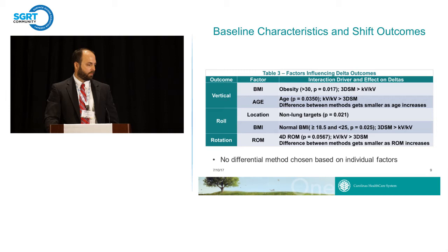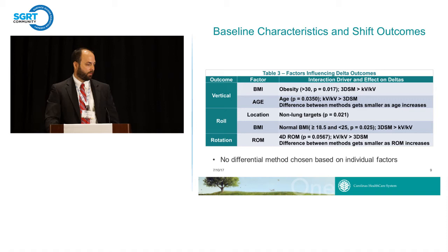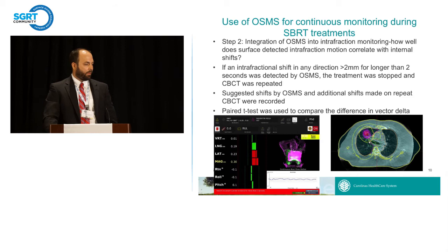We saw a couple of differences in how patient factors may affect shifts — some expected, some not. We saw a slight effect of BMI on vertical shift, which we expected might be a factor, and that also played a role in the quantity of shift overall. We did see some range of motion differences, but just for rotation. None of these showed a high enough correlation to make us think OSMS was not capable of doing this for initial patient setup.